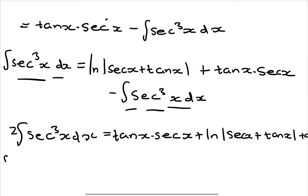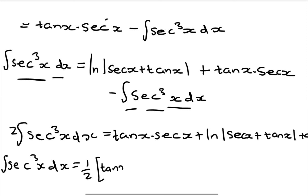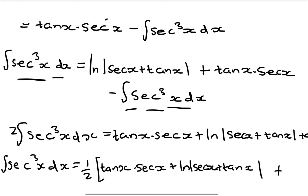Therefore, the integral of sec³(x) dx, dividing both sides by 2, becomes one half times tan(x)sec(x) plus ln|sec(x) + tan(x)| plus a constant C.